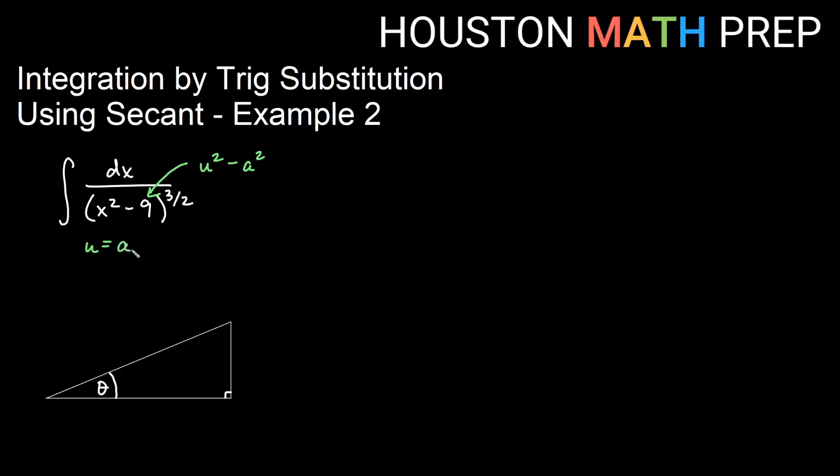In that case, we let u equal to a secant of theta. In this case, our a is 3 and our u is x, and so our substitution will be that x equals 3 secant of theta. We'll also need a replacement for dx, so taking the derivative will give us dx is 3 secant of theta tangent of theta d theta.